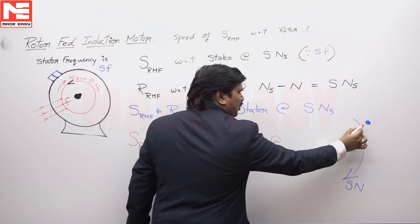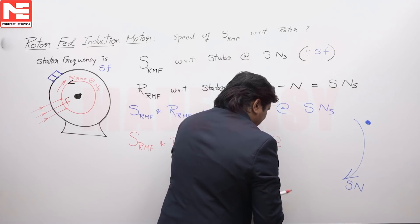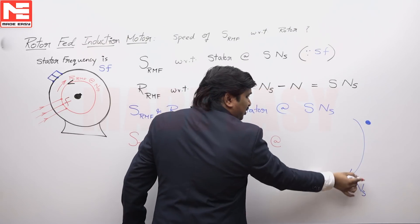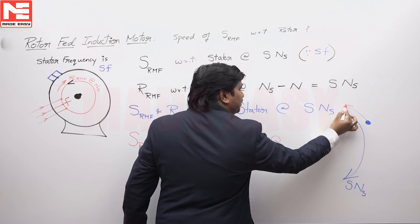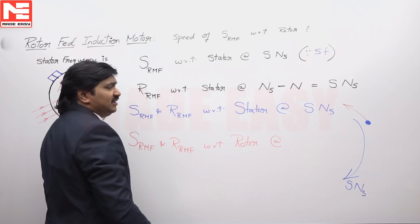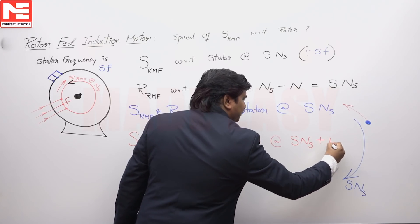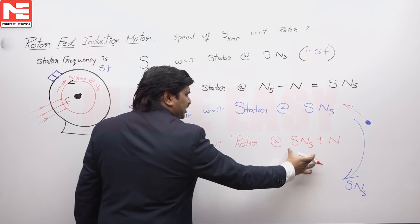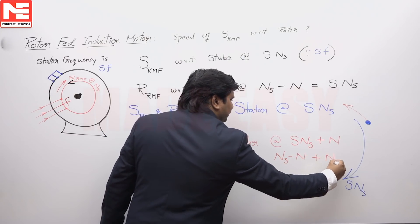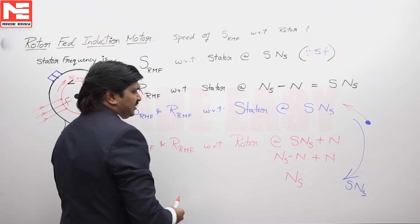Now consider the same thing with respect to a rotating point. If the rotor rotated in the same direction as the magnetic field, we would say s·Ns minus N. But the rotor is rotating in the opposite direction to the magnetic field, so we say s·Ns plus N. What is s·Ns? It is Ns minus N, so s·Ns plus N equals Ns.